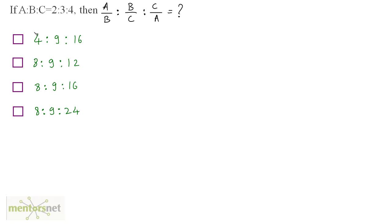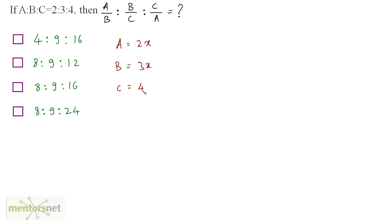You have been given the ratio of a is to b is to c as 2 is to 3 is to 4 and you have to find out what is a by b is to b by c is to c by a. Now, you have been given the ratio of a, b and c as 2 is to 3 is to 4. So you can always write this as a equals to 2x, b is equal to 3x, and c is equals to 4x, where x is basically the highest common factor of a, b and c.